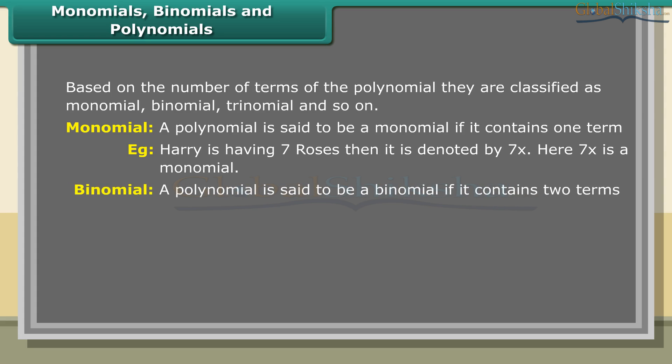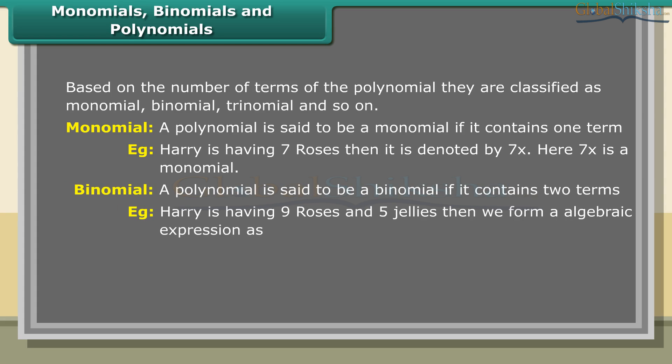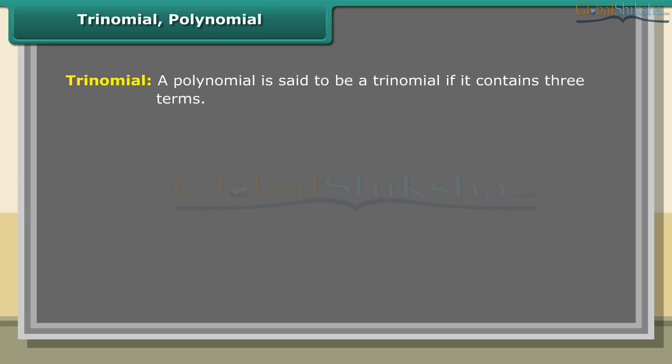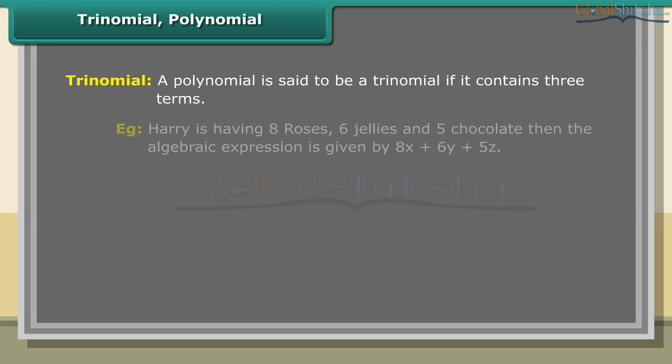A polynomial is said to be a binomial if it contains two terms. For example, if Harry has nine roses and five jellies, the algebraic expression is 9x + 5y, where x denotes the number of roses and y denotes the number of jellies. 9x + 5y is a polynomial containing two terms.